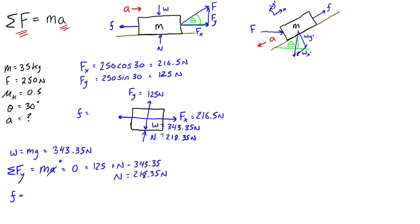And now that we have n, we can find out what the force of friction is, because friction is just going to be equal to mu k times n. Mu k was 0.5, and n is 218.35, so it's just half that. And friction is going to be then 109.175 newtons.